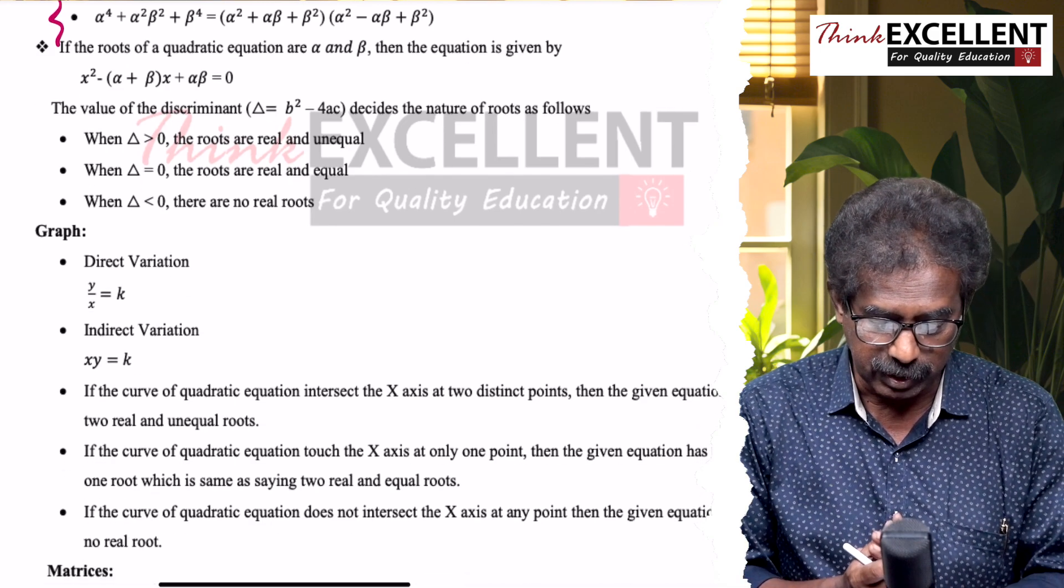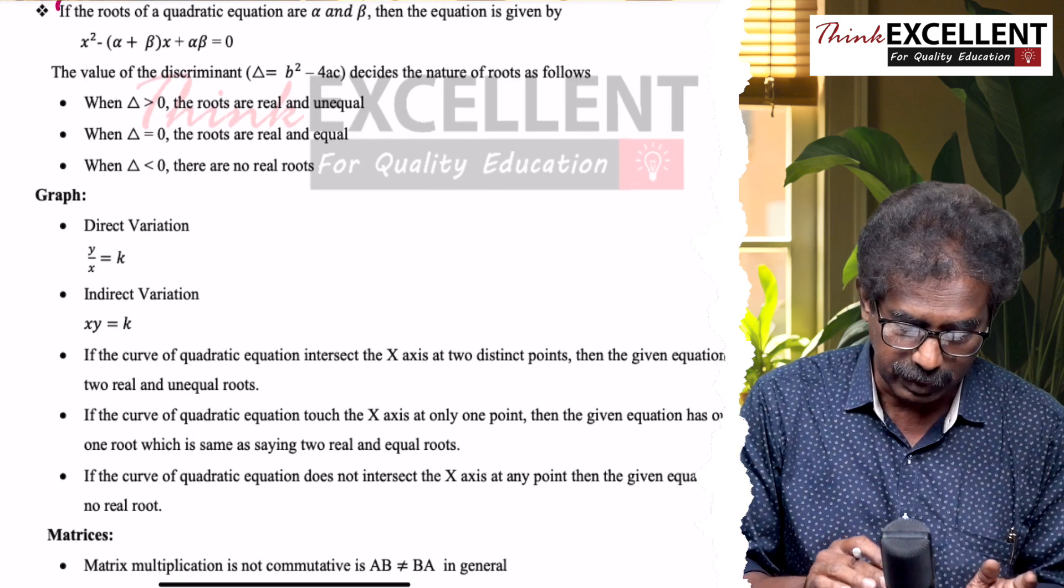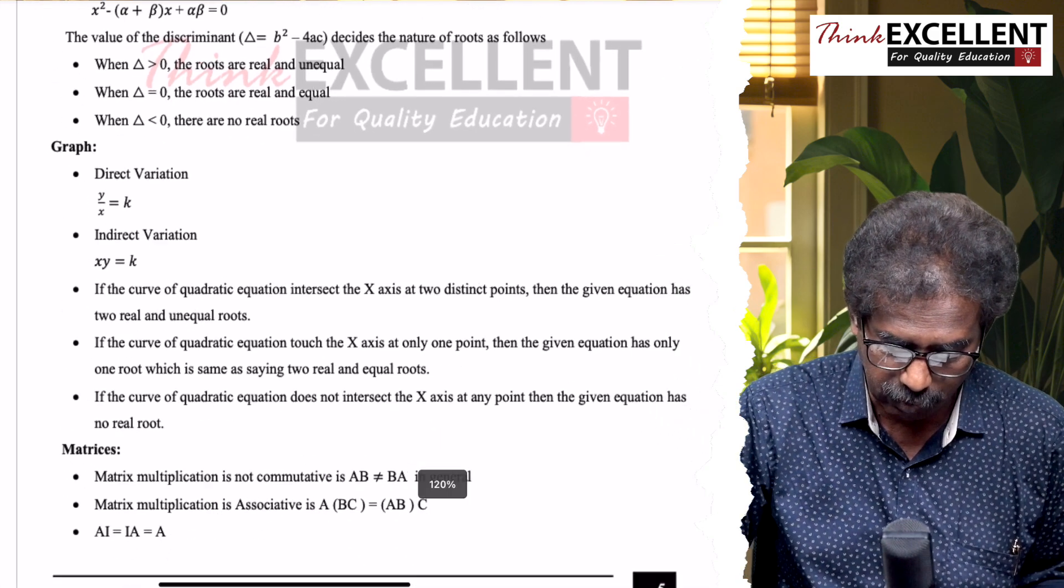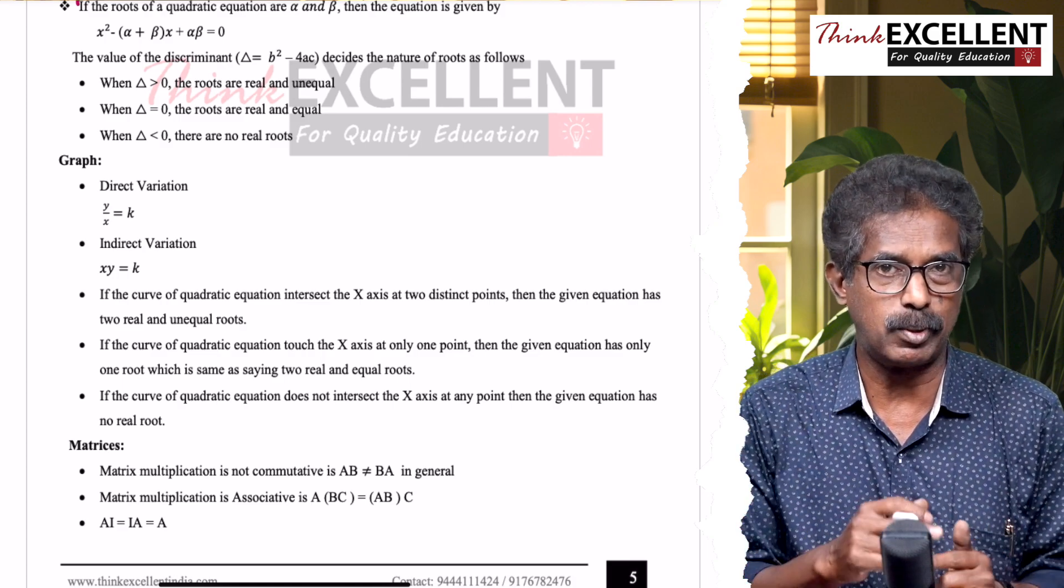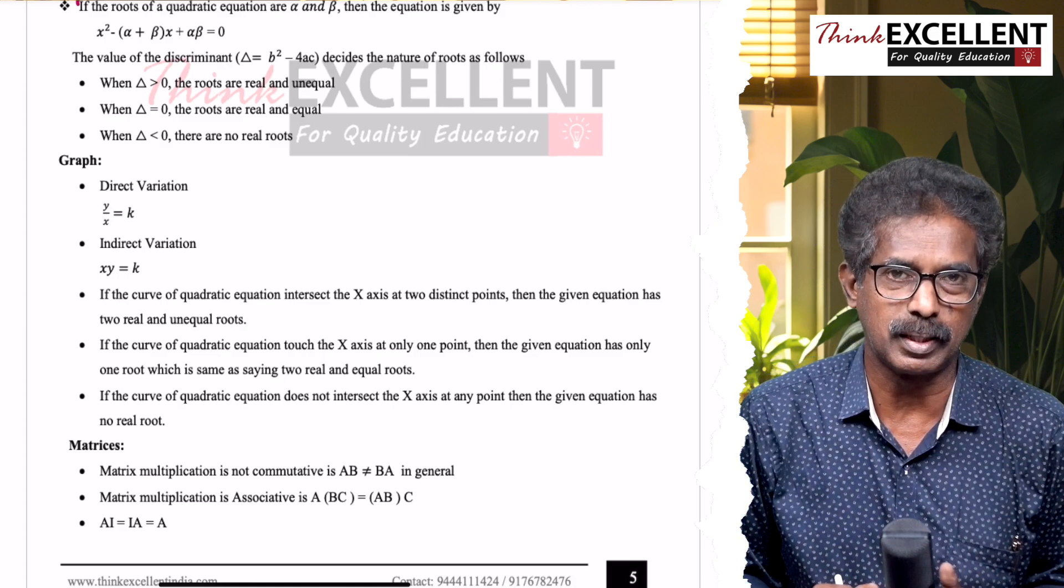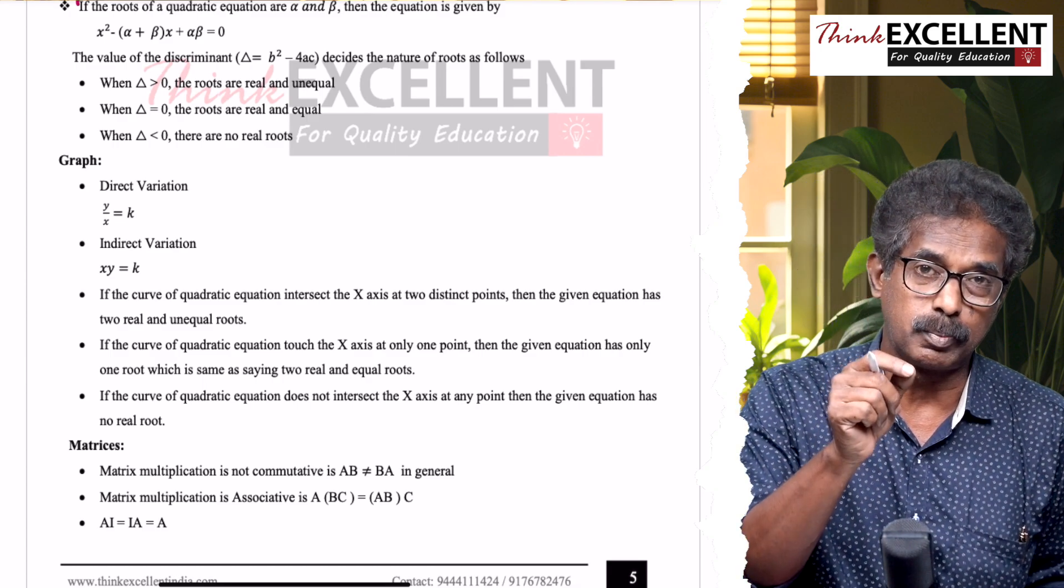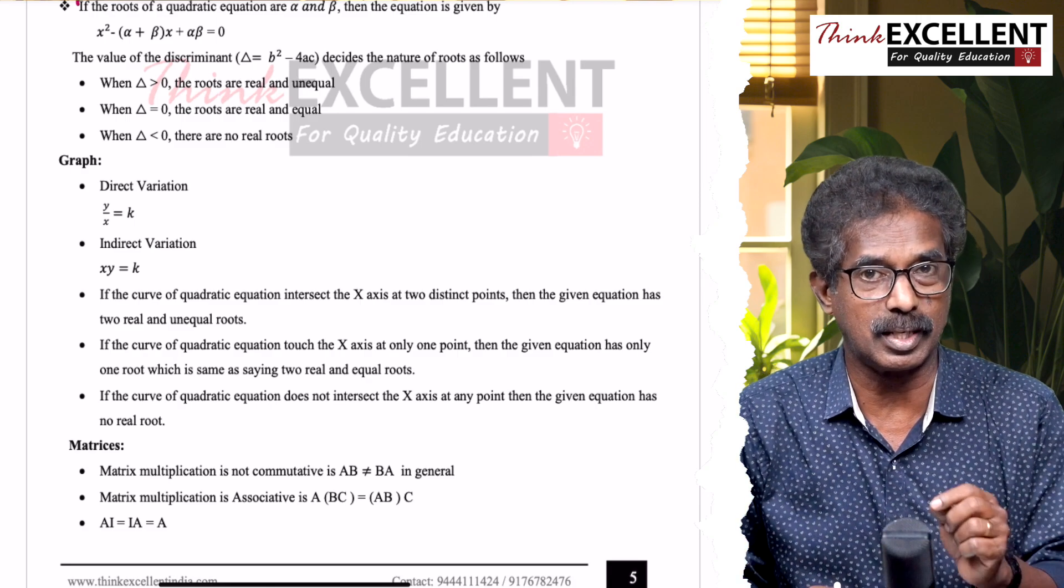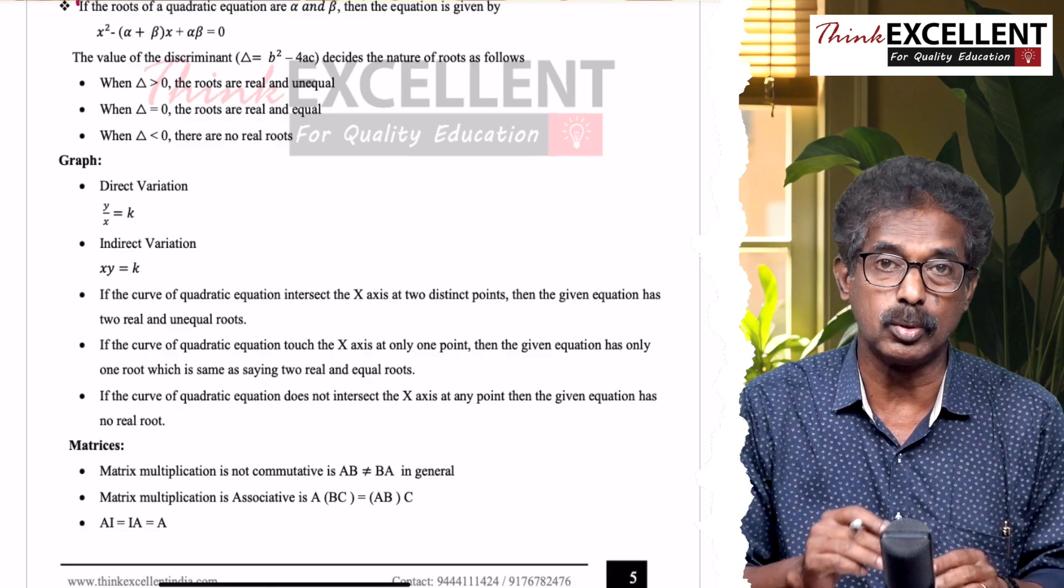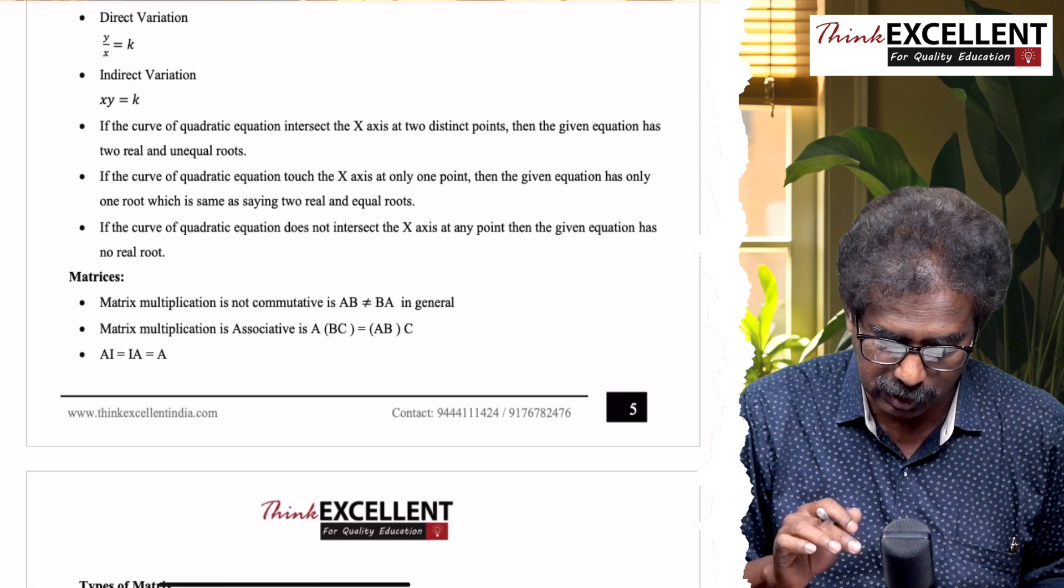The graphical method - in the graph, it won't touch x-axis. Then, graph: direct variation, y/x = k. Indirect variation, xy = k. And the curve, quadratic curve, it is a parabola. Objective questions are important. Then in the variation, direct variation xy = k - in the curve it is rectangular hyperbola. Direct variation you will be getting a straight line.